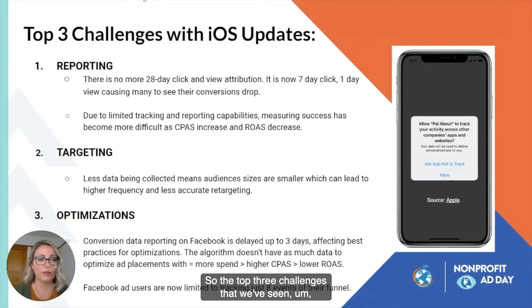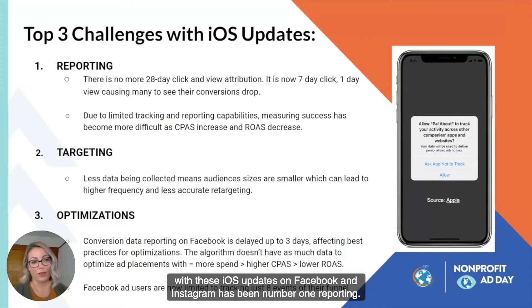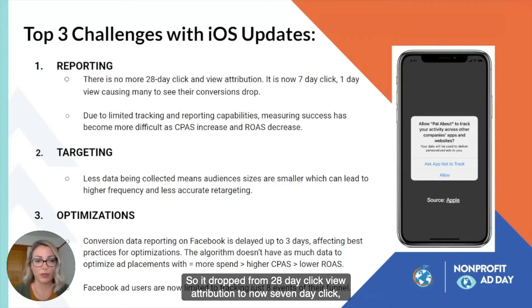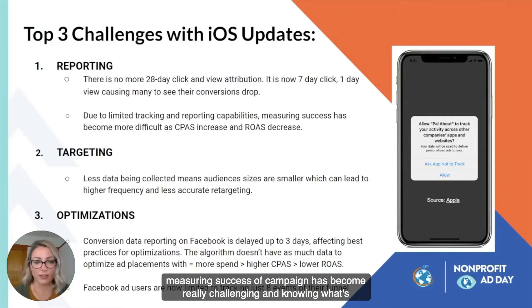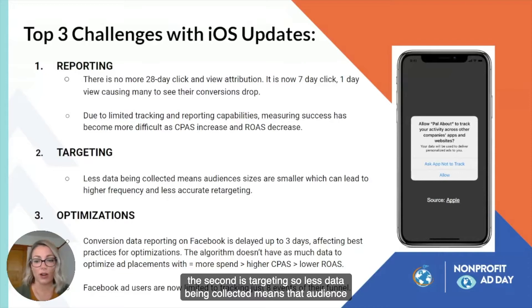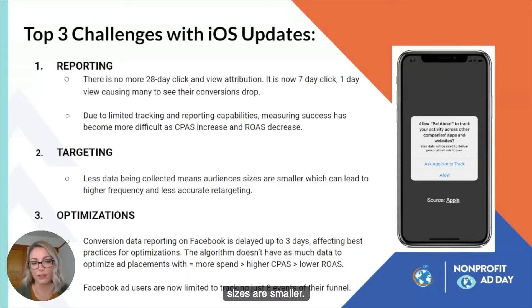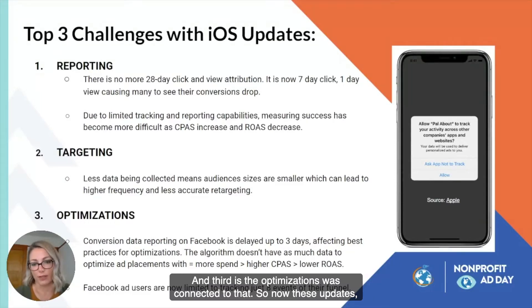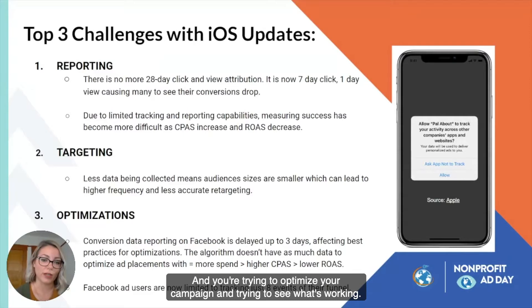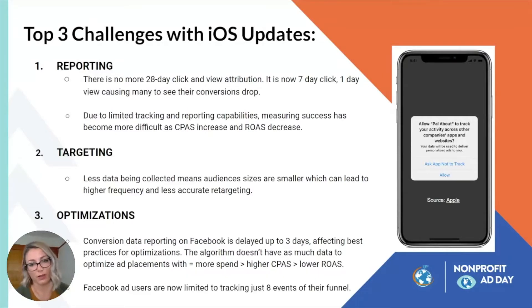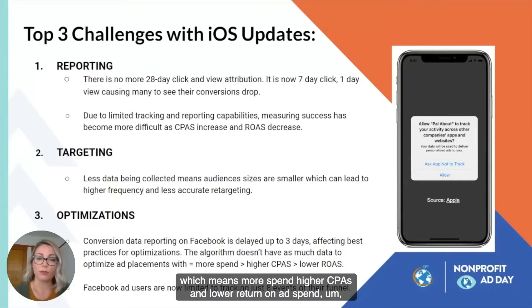The top three challenges we've seen with these iOS updates on Facebook and Instagram: Number one is reporting — it dropped from 28-day click and view attribution to now seven-day click, one-day view, or one-day click, seven-day view in some cases, making measuring campaign success really challenging. Second is targeting — less data means smaller audience sizes, higher frequency, and less accurate retargeting. Third is optimization — conversion data reporting is now delayed up to three days, the algorithm has less data to work with, campaigns get stuck in the learning phase, resulting in more spend, higher CPAs, and lower return on ad spend.